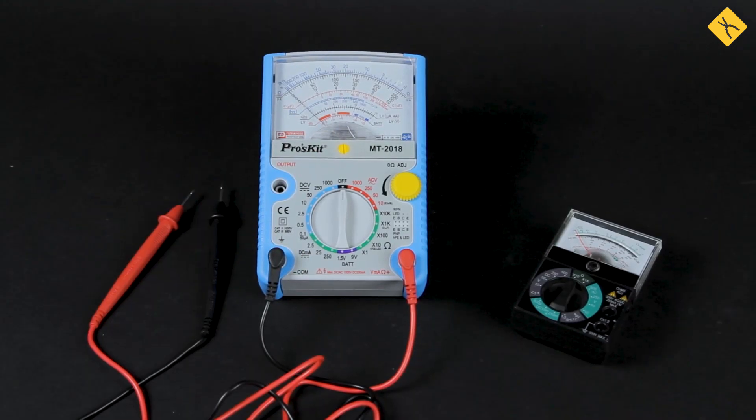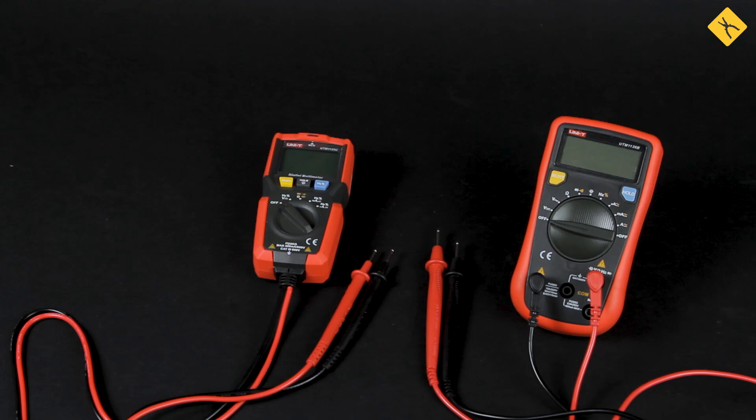Some time ago, only analog multimeters were used, since there were no alternatives. In time, digital multimeters began to take their place, and now they are used in most cases.